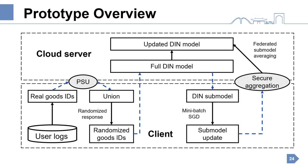Let's overview the prototype. A client extracts its real goods IDs from local data and joins in private set union to obtain the union. Then the client applies randomized response to generate randomized goods IDs, which are used to download the DIN submodel and to upload the submodel updates through secure aggregation. The cloud server aggregates the submodel updates with federated submodel FedAvg, and finally updates the global DIN model.